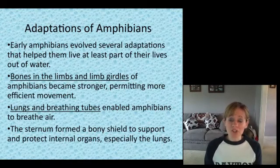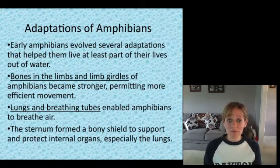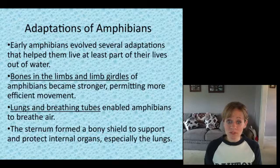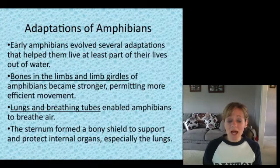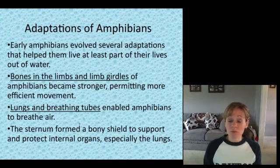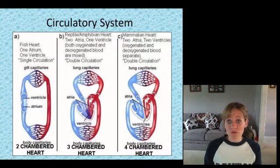Bones in the limbs and limb girdles became stronger, permitting more efficient movement. The lungs and breathing tubes enabled them to breathe air as adults. And the sternum formed a bony shield to protect these new lungs and other internal organs.